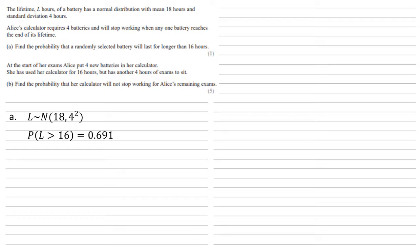But we already know that it's lasted 16. So we're working out the probability that L is larger than 20 given that L is already larger than 16. If you think of our formula for conditional probability, we know that the probability of A given B equals the probability of A intersect B, all divided by the probability of B.